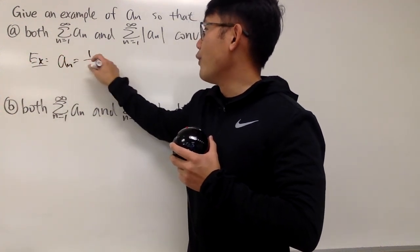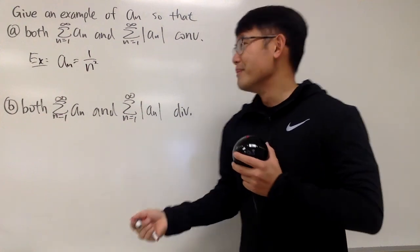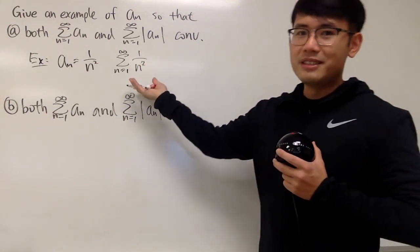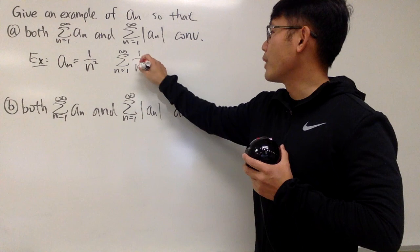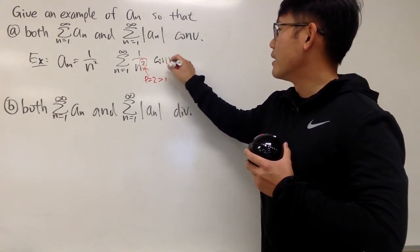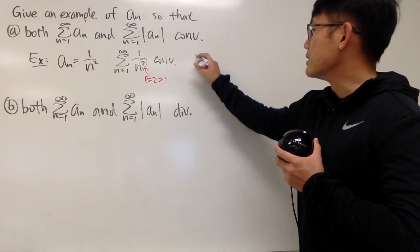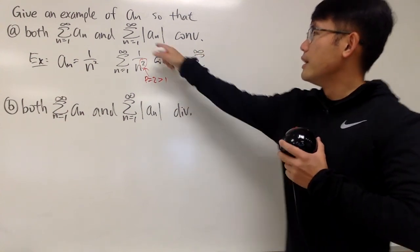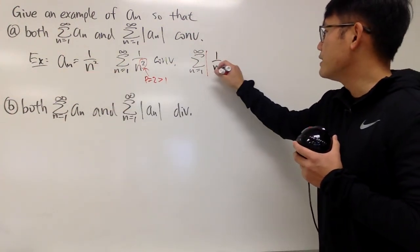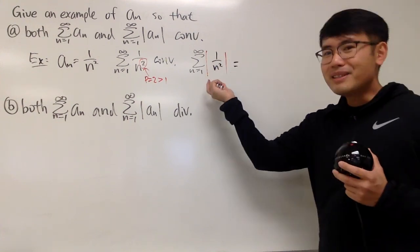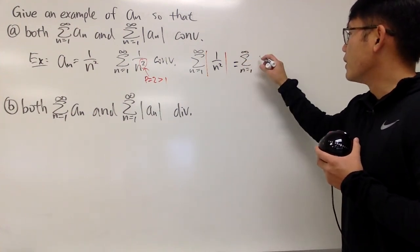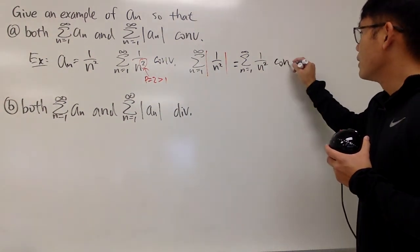If you take a_n to be 1/n², that's enough. When you do the series as n goes from 1 to infinity of 1/n², this is just a p-series, and the p here is 2 — and you have to say 2 is greater than 1 — so that's why this converges. And you can also see that for the series of the absolute value of a_n, you just put 1/n² inside the absolute value. I picked the positive version, so the absolute value doesn't really matter, and this series also converges.